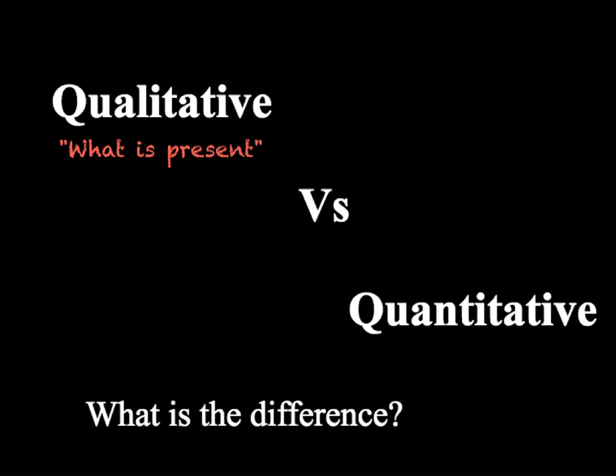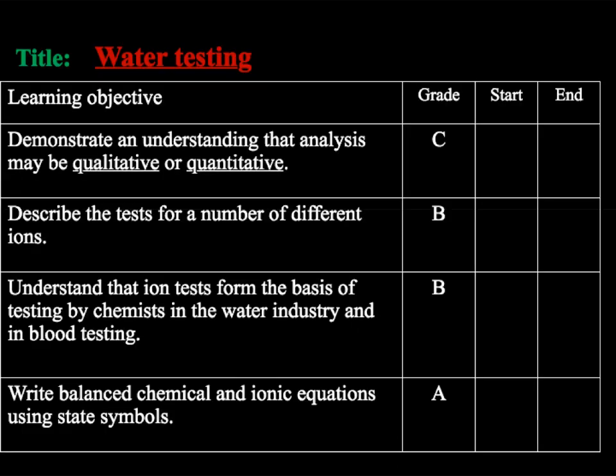Quantitative analysis, on the other hand, tells us how much is present. For example, how much alcohol is present in a driver's blood, or how much of each trace element there are in a sample of water. So in this video tutorial, we will look at both qualitative and quantitative data.